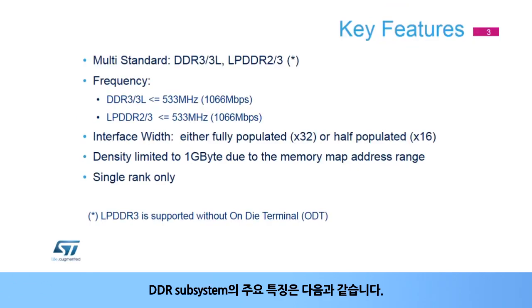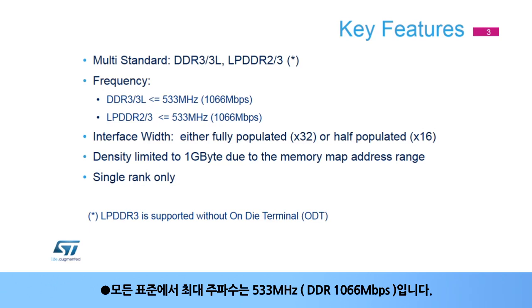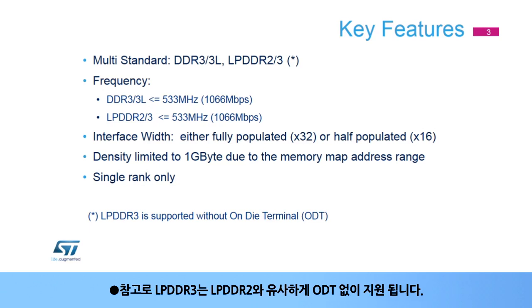The key features of the DDR subsystem are: support for multiple DDR standards — DDR3, DDR3L, LPDDR2, and LPDDR3. For all standards, the maximum frequency is 533 MHz, DDR at 1066 Mbps. Note that LPDDR3 is supported without On-Die Termination, or ODT, similar to LPDDR2 support.